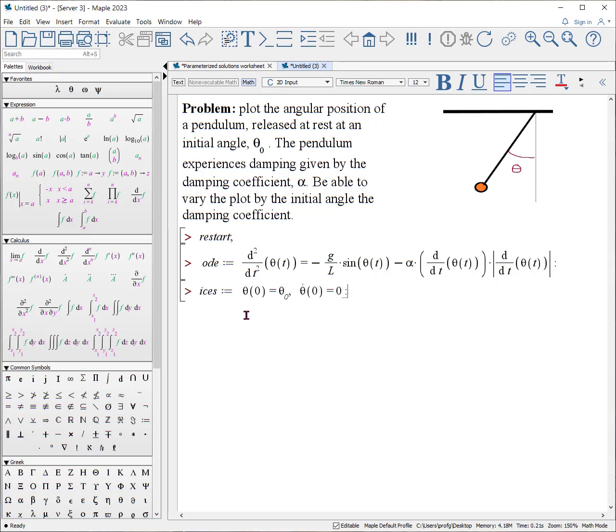Here are initial conditions. We're going to say the initial angle of the pendulum is at some angle called θ₀ and that its initial angular speed is zero. There are four constants in this problem: g, L, α, and the initial angle.